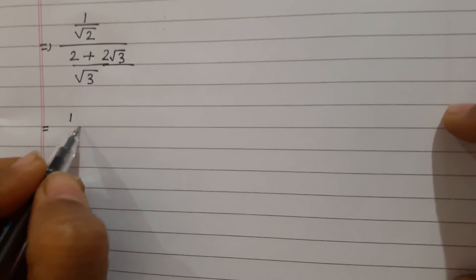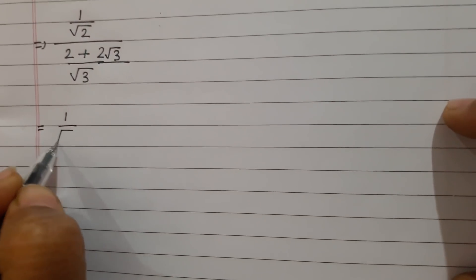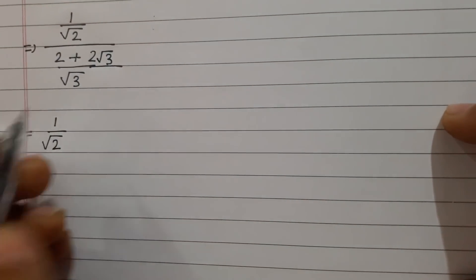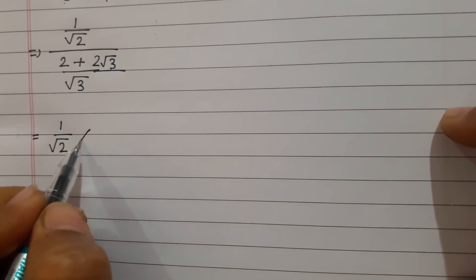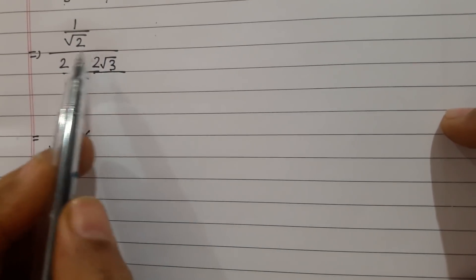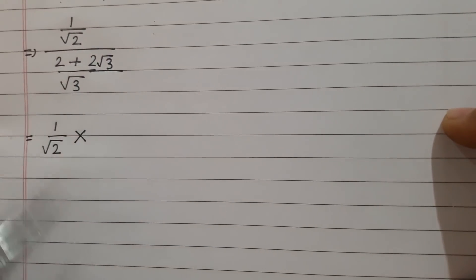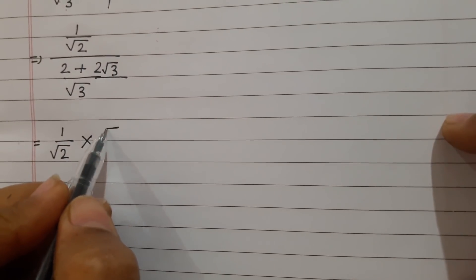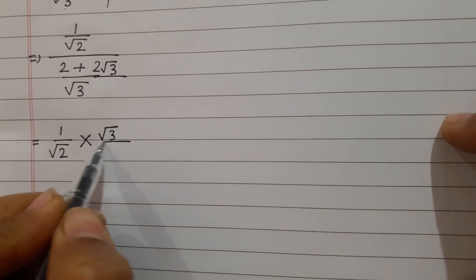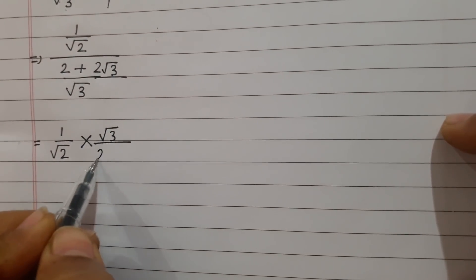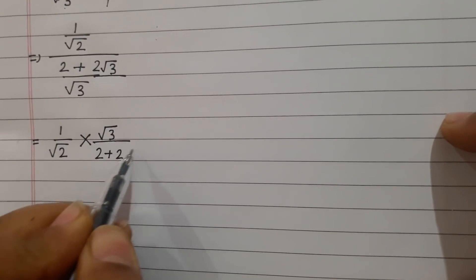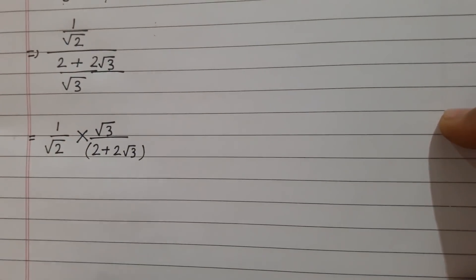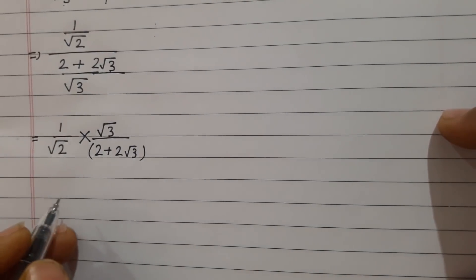Now this whole fraction is divided, so we will change it into multiplication. We will reverse the second fraction — the numerator becomes the denominator and the denominator becomes the numerator. So it becomes root 3 divided by 2 plus 2 root 3.